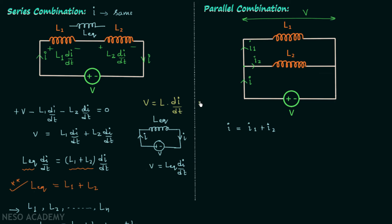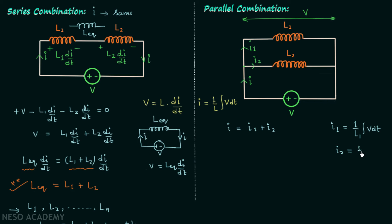For an inductor, the current through it equals (1/L)·∫V dt. For the first inductor, I1 equals (1/L1)·∫V dt. Similarly, for the second inductor, I2 equals (1/L2)·∫V dt.